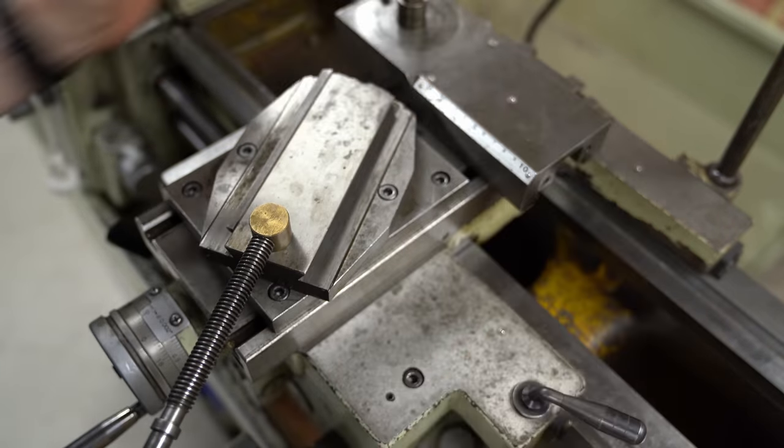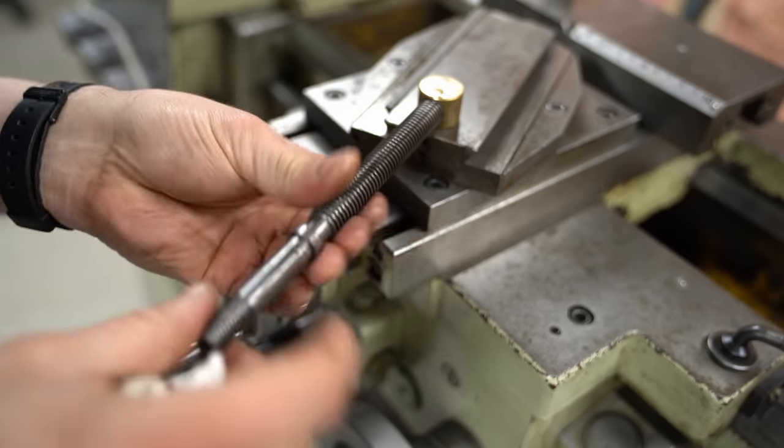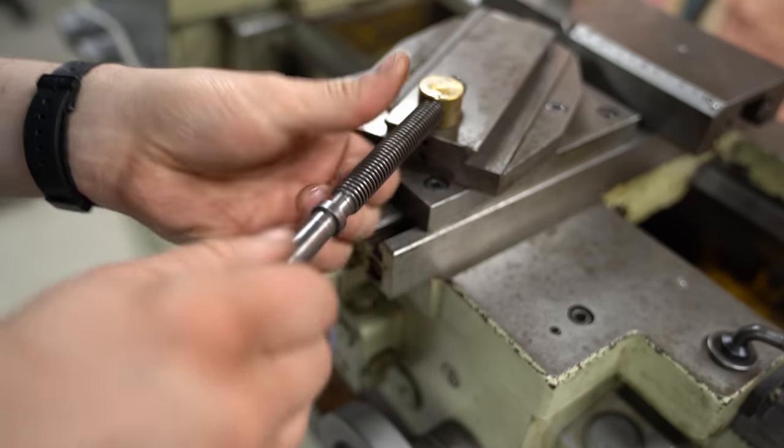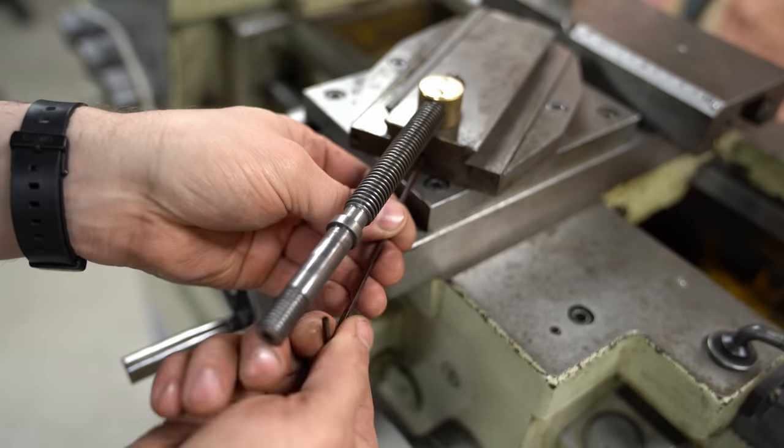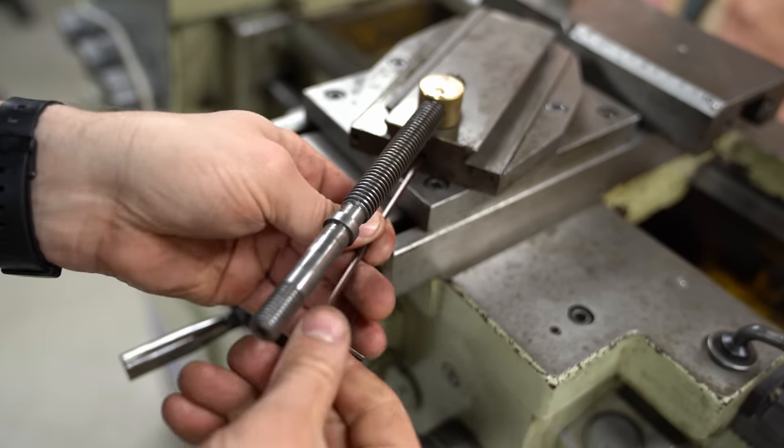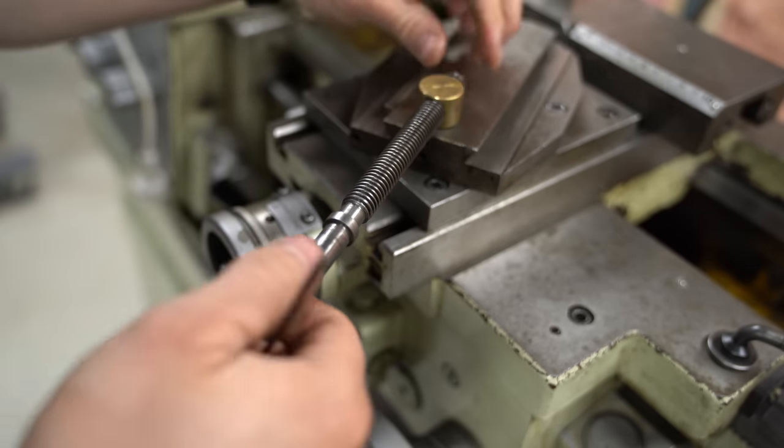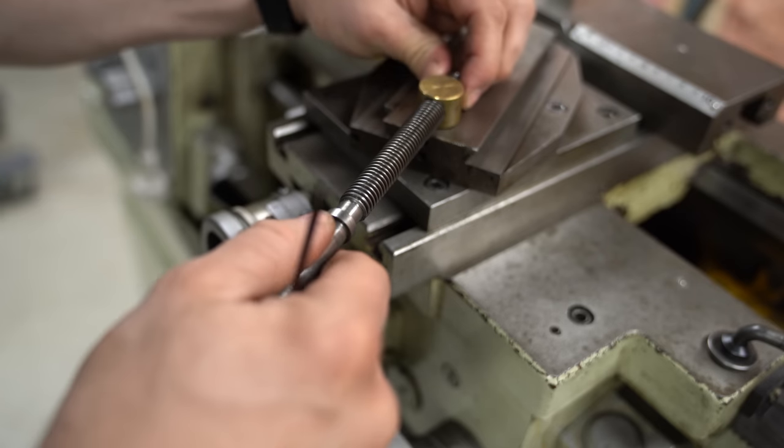I'm just removing the compound slide, and to my surprise the nut of the compound is actually very loose. I'll try nipping up the grub screw, and actually there's a space for a second grub screw which is missing. And yeah, that's eliminated almost all of the play.